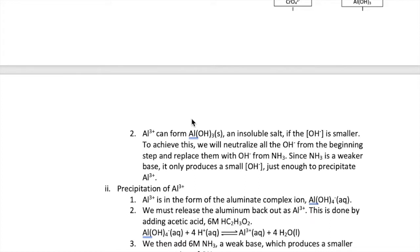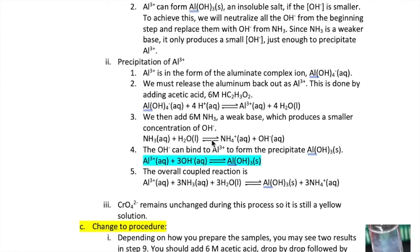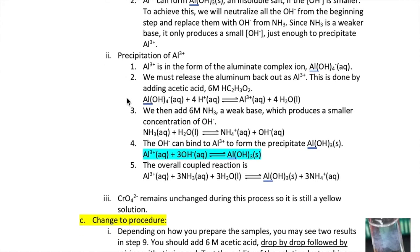However, at low concentration of hydroxide, aluminum instead undergoes a precipitation reaction to form the solid aluminum hydroxide shown here. So this is the reaction that we're going to carry out to precipitate the aluminum ion. The trick is to reduce the hydroxide concentration in solution.